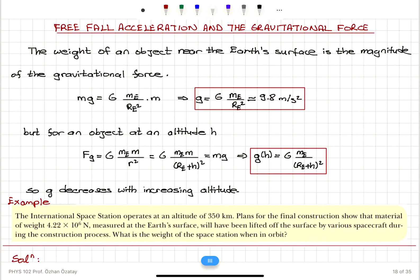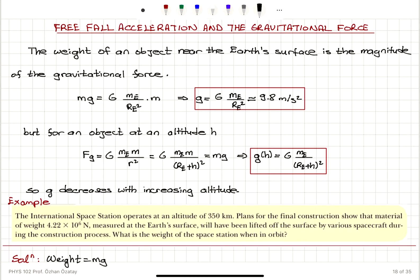Here is an example. The International Space Station operates at an altitude of 350 kilometers — a large number. Plans for the final construction show that material of weight 4.22 × 10⁶ Newtons, measured at the Earth's surface, will have been lifted off by various spacecraft during construction. What is the weight of the space station when in orbit? We know the weight on Earth's surface: W = mg = 4.22 × 10⁶ N at zero altitude. We want the weight at an altitude of 350 kilometers.